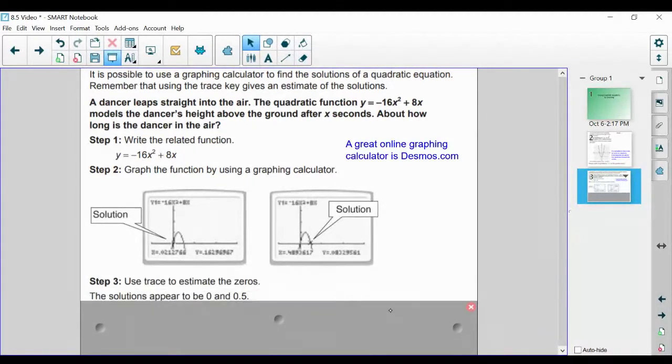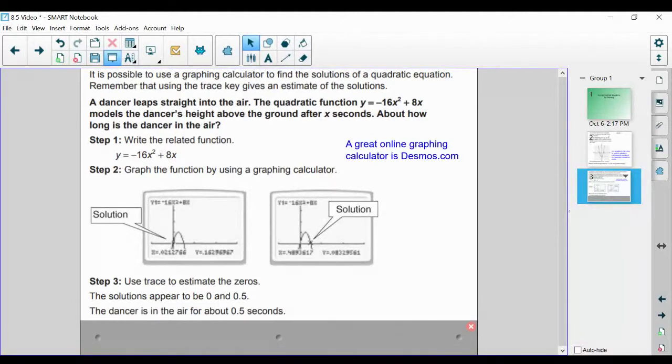We can use our trace button to estimate the solutions appear to be 0 and 0.5. So the dancer is in the air for about 0.5 seconds or half of a second.